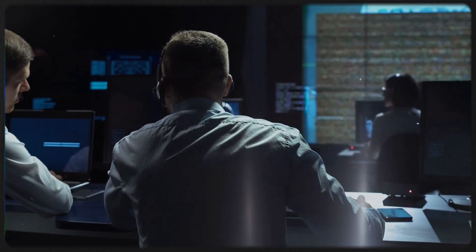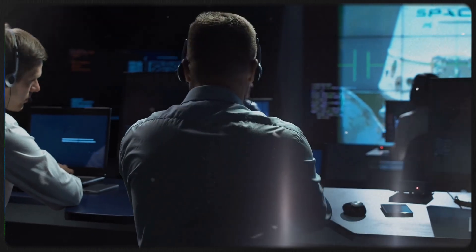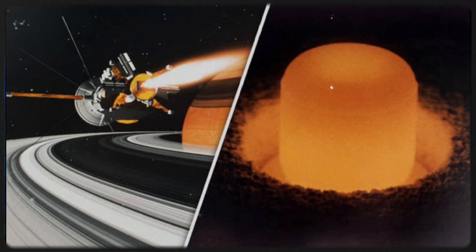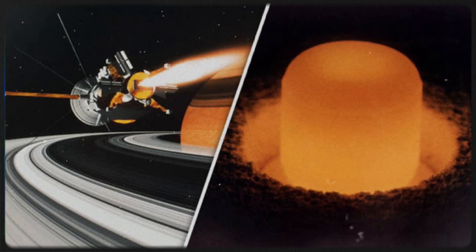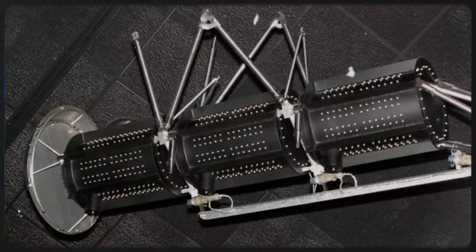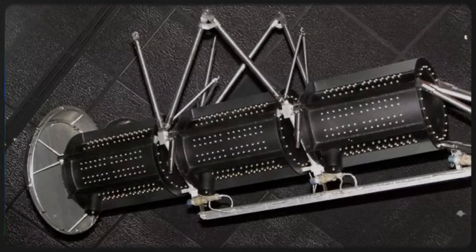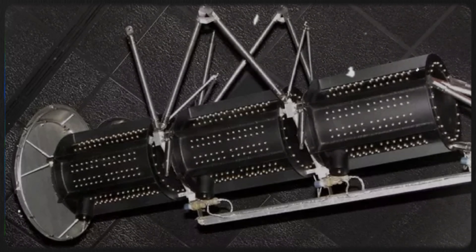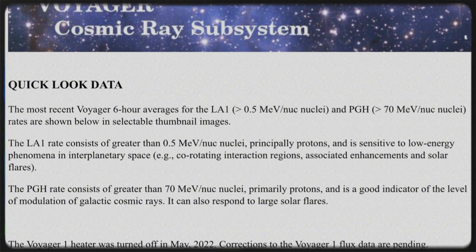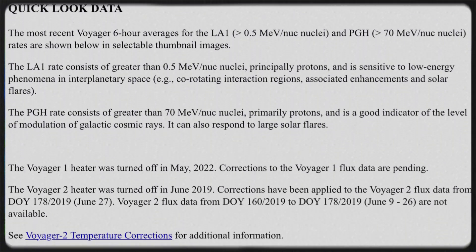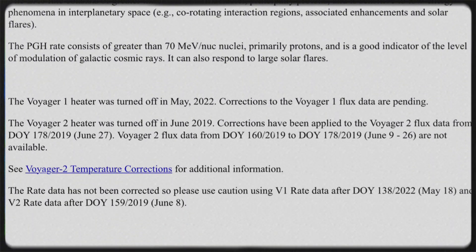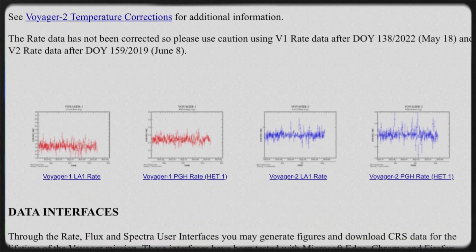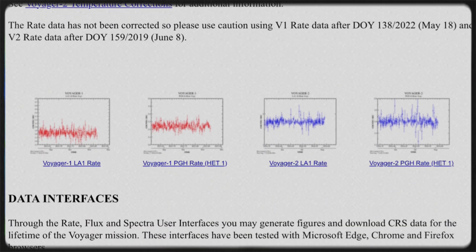Currently, Voyager 1 has four operational components left, while Voyager 2 has five. These systems are powered by decaying plutonium, which will eventually be depleted. The spacecraft's battery output diminishes by 4 watts each year, leading NASA to make difficult decisions about which components to shut down. For instance, in 2019, the heater for the vital cosmic ray detector was turned off. As the mission winds down, the magnetometer and plasma science instrument are expected to be among the last components to be deactivated.